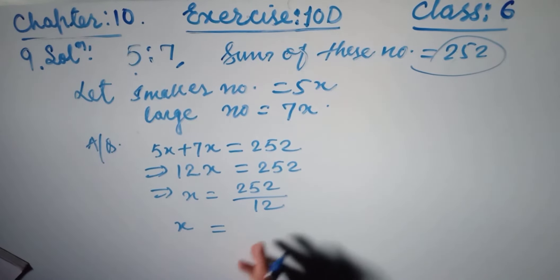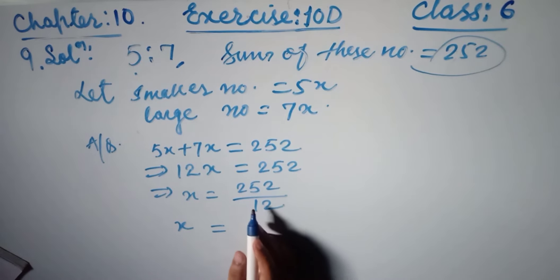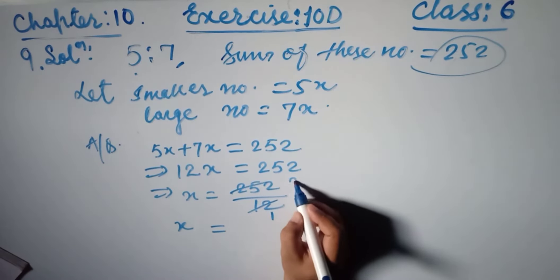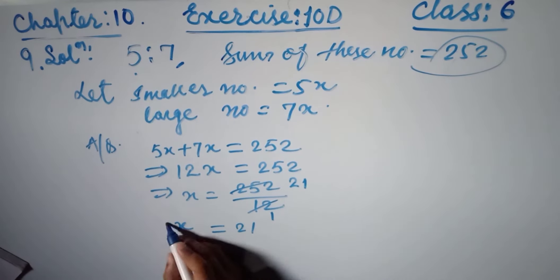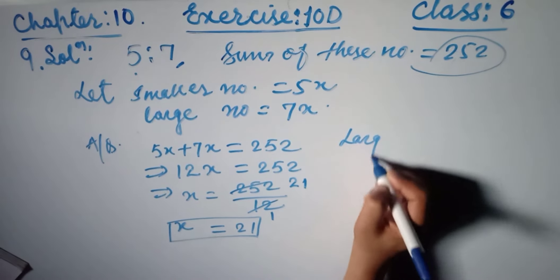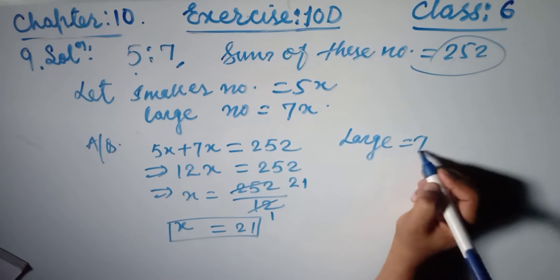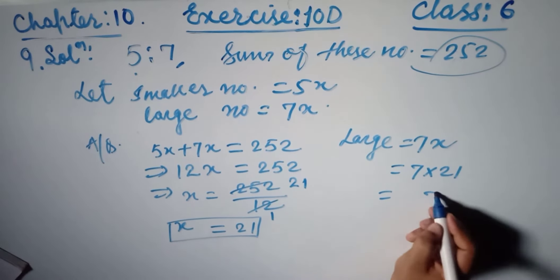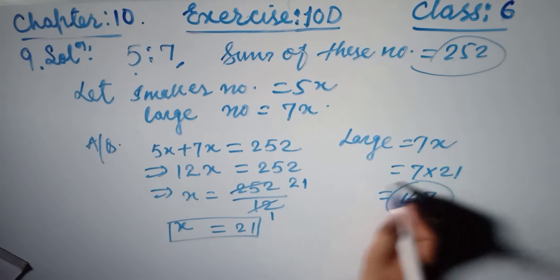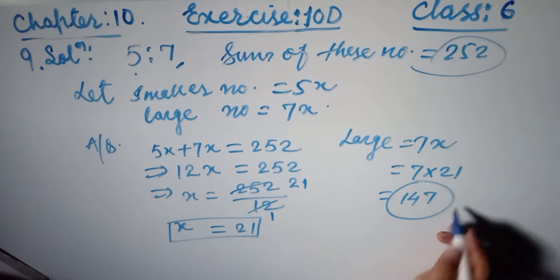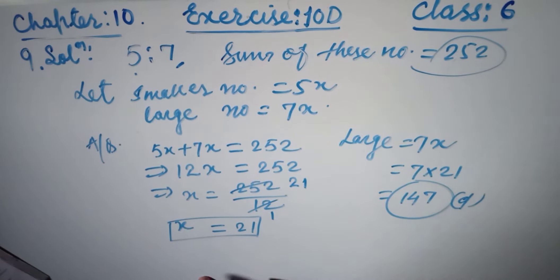So x equals 252 divided by 12, which gives x equal to 21. We need to find the larger number, which is 7x. So 7 multiplied by 21 equals 147. Therefore 147 is the correct answer, and D is the correct option.